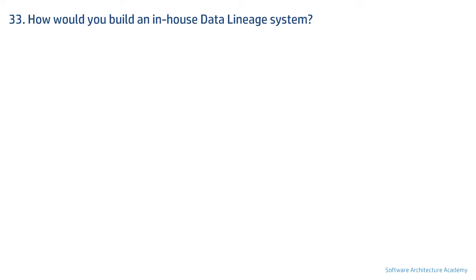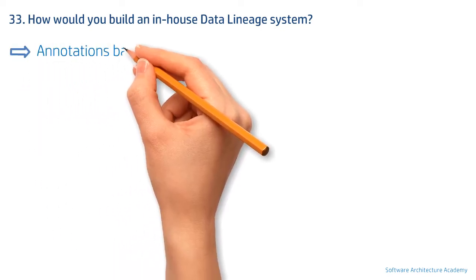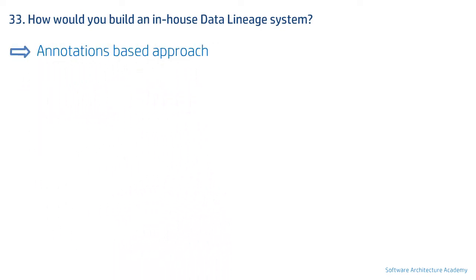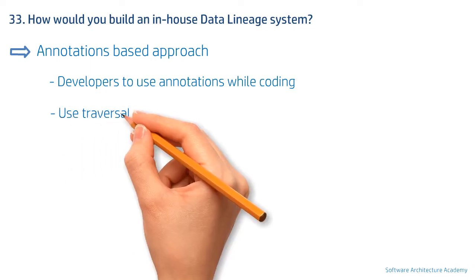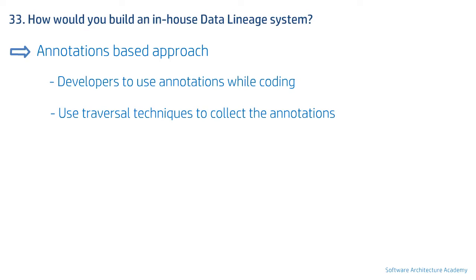To answer this, there are two ways. The first is an annotator-based approach, where you ask developers to use annotations on existing code and set up a process to mandatorily add annotators to new code. You can then use traversal techniques to walk the annotators and draw the lineage. The advantage is that it's one of the easiest and least expensive ways to solve such a complex problem.